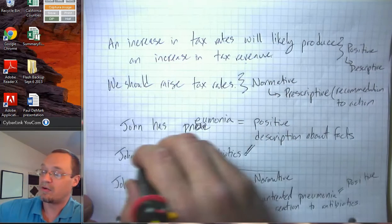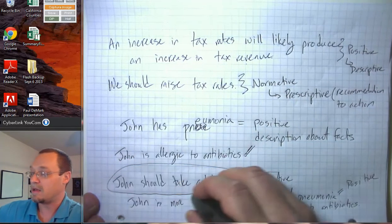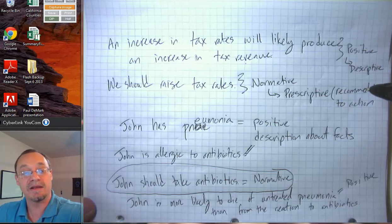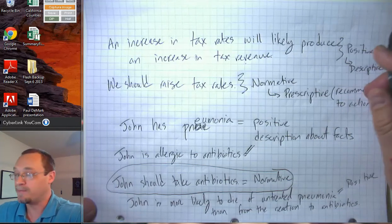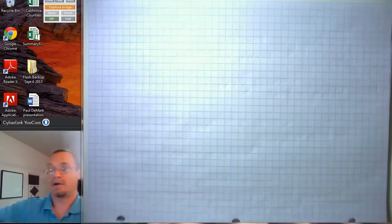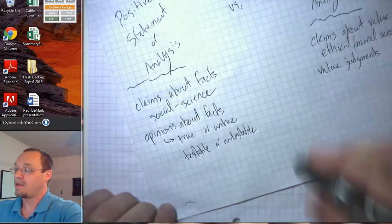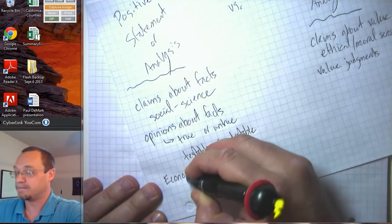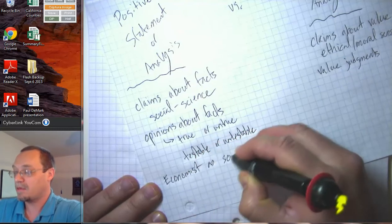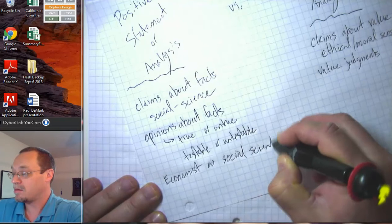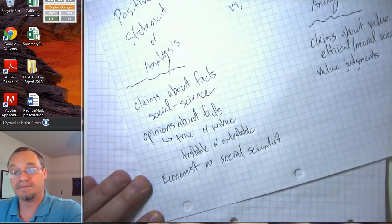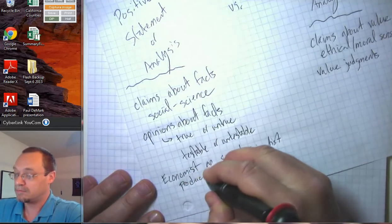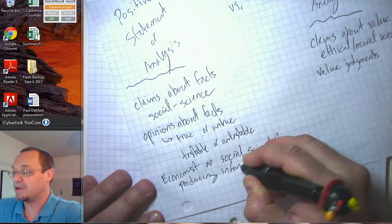Generally, normative statements may rely upon positive statements, but we have to make some additional normative assumptions to get there. When we're thinking about acting as economist as social scientist, studying a problem, trying to produce information, then we're engaged in positive analysis.